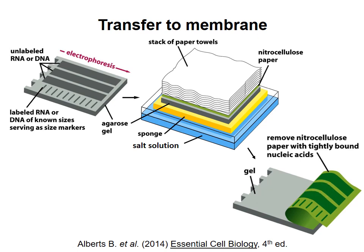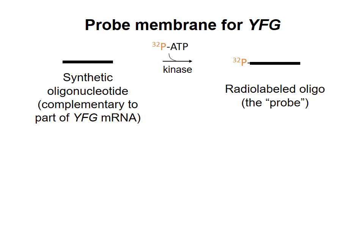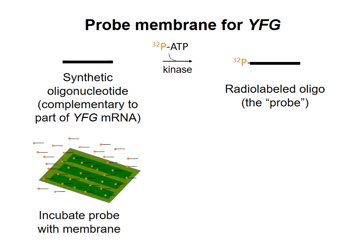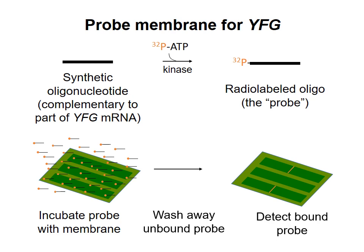To see which samples contain mRNA for your favorite gene, you need to probe the membrane. To do that, you synthesize an oligonucleotide probe that is complementary to part of the mRNA for your favorite gene. I'm assuming here that we know the sequence of the mRNA because the human genome has been completely sequenced. You then add a radioactive phosphate group to the 5' end of the probe. You incubate the membrane with the probe under conditions that will allow specific annealing of the probe to its complementary sequence, but not to other RNAs. Then you wash away unbound probe and detect radioactivity on the membrane. If you can see a band in the lane, then that means that mRNA for your favorite gene is present in that sample.